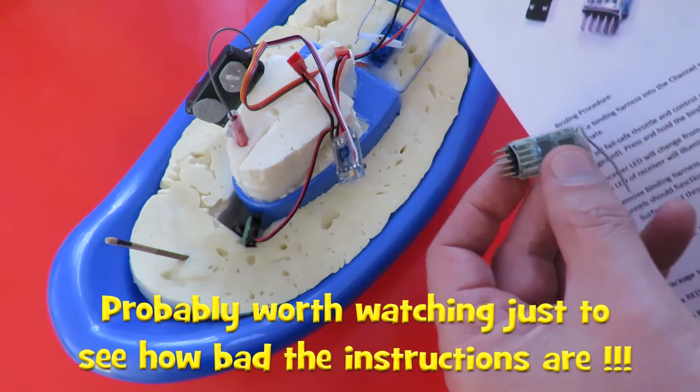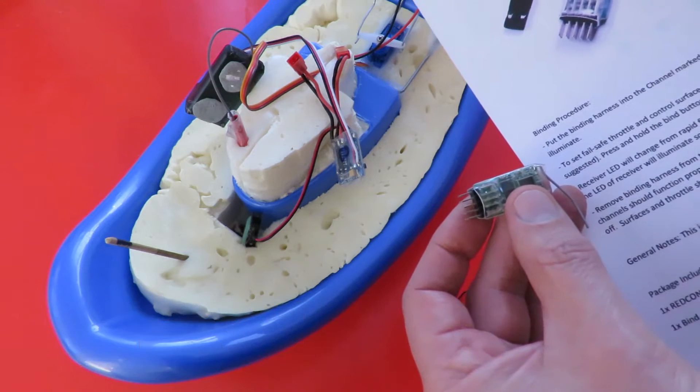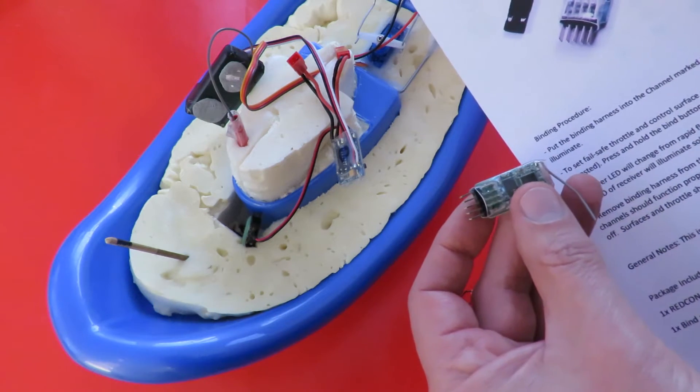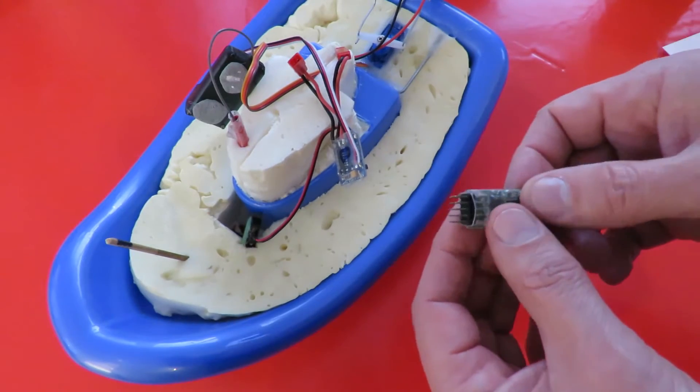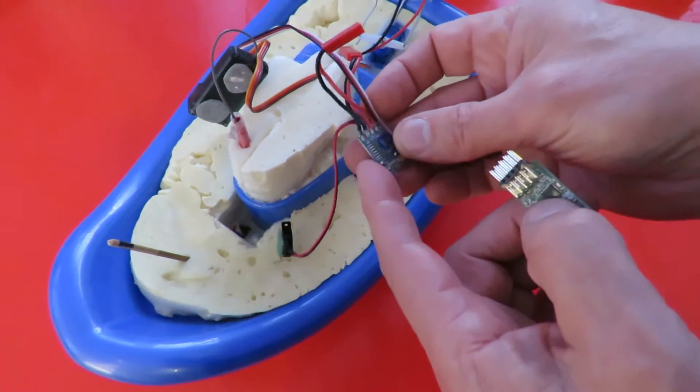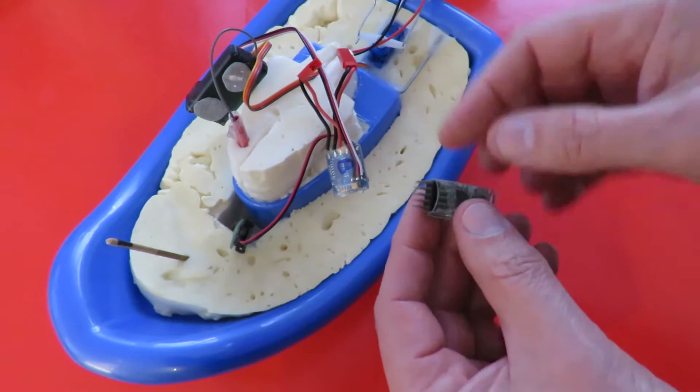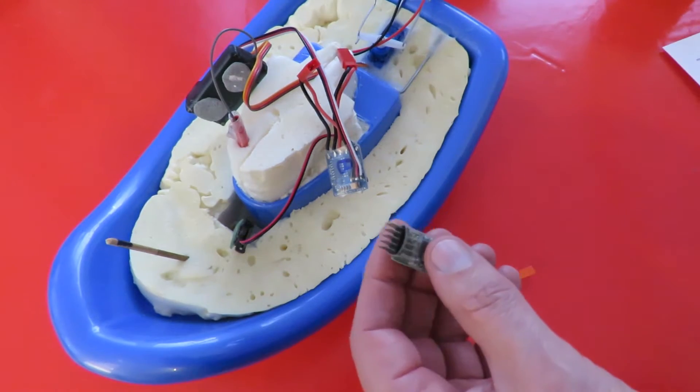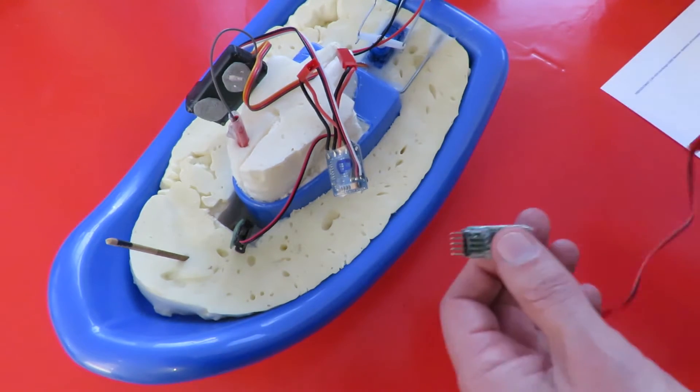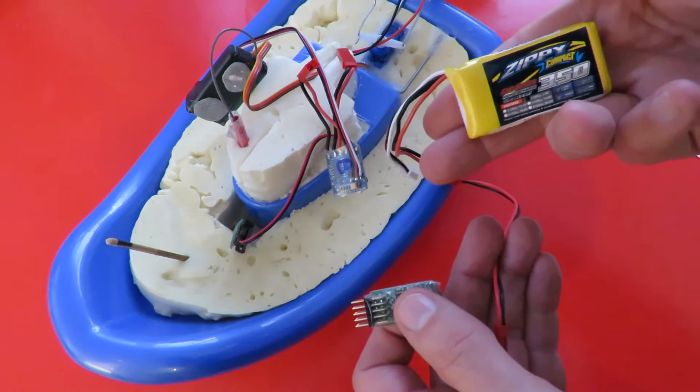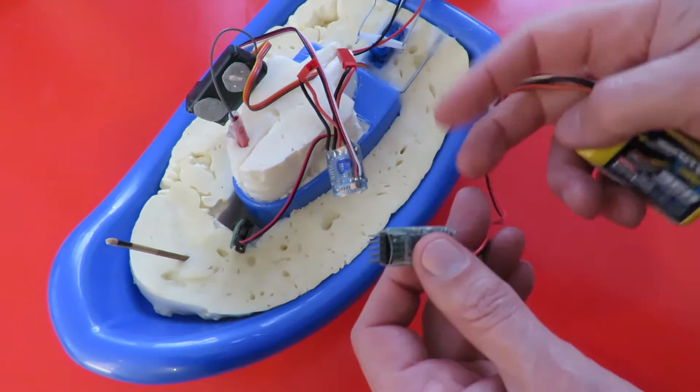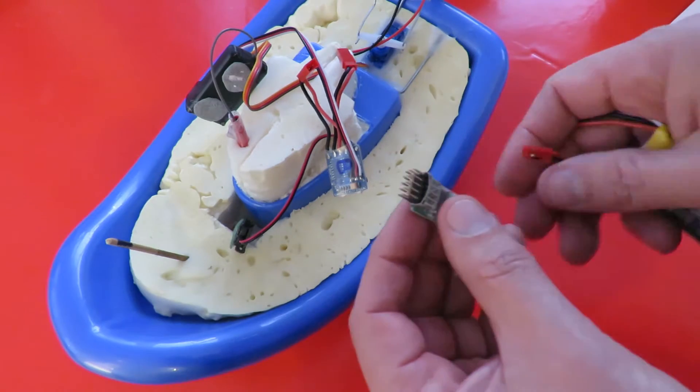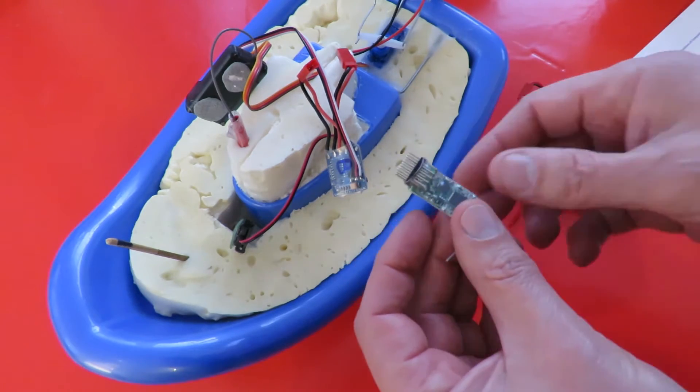Got the binding instructions here that I've copied off the Banggood website. Got my toy boat here simply so that I can use the ESC to put the power in. Got this little LiPo battery that also came in today's post bag so we'll stick it all together and see if we can get it to work.